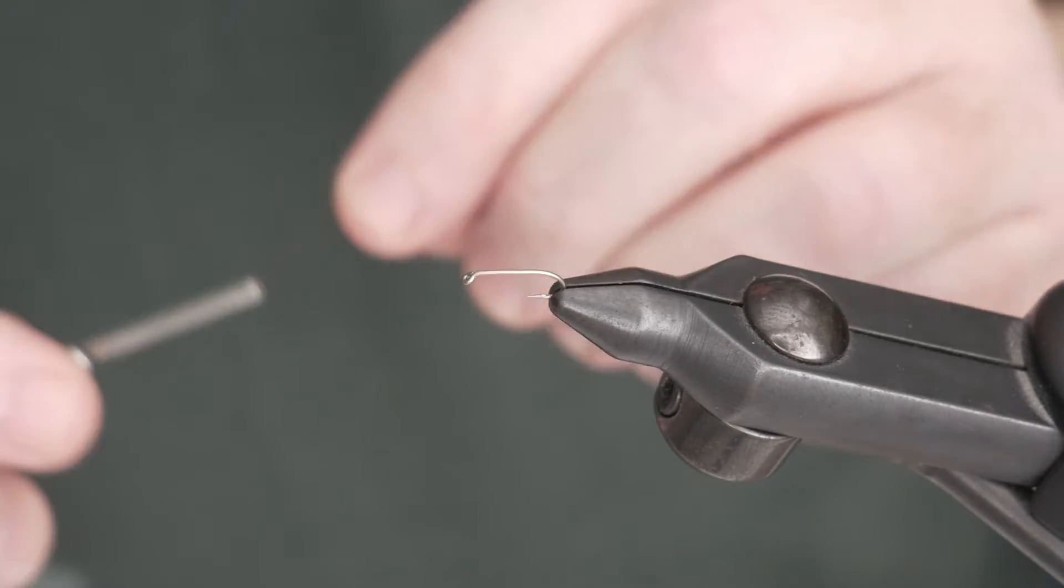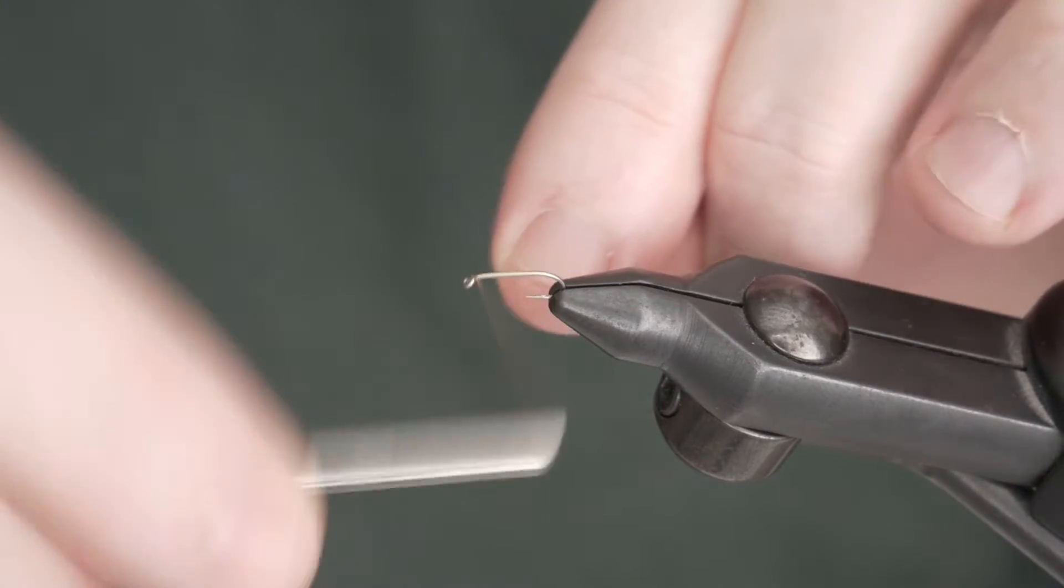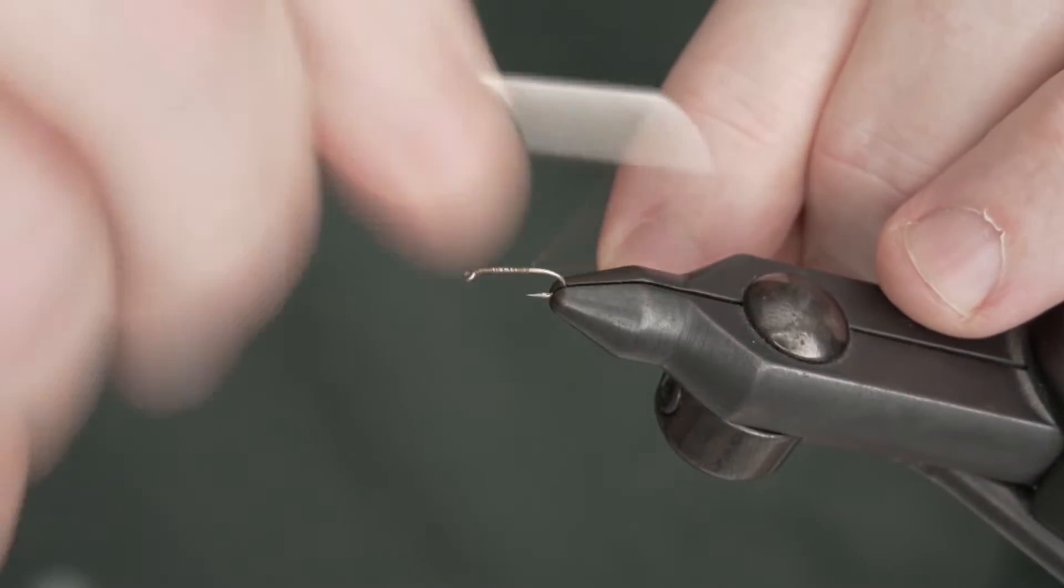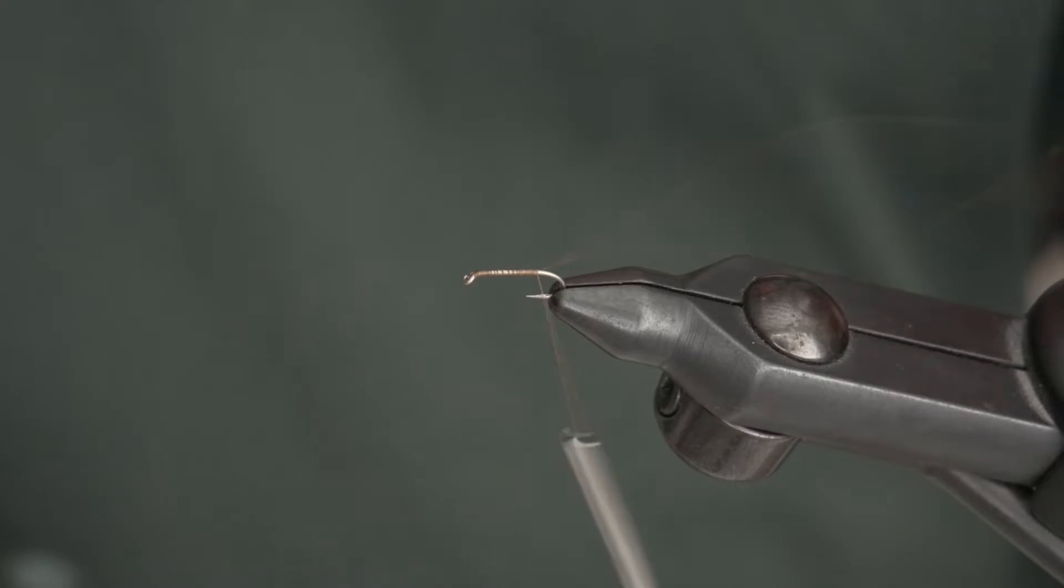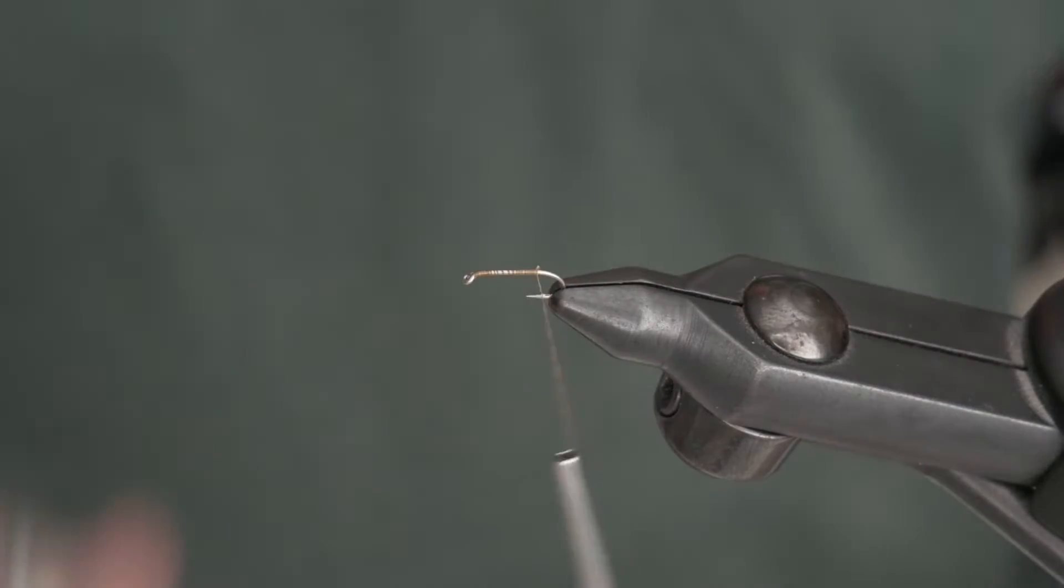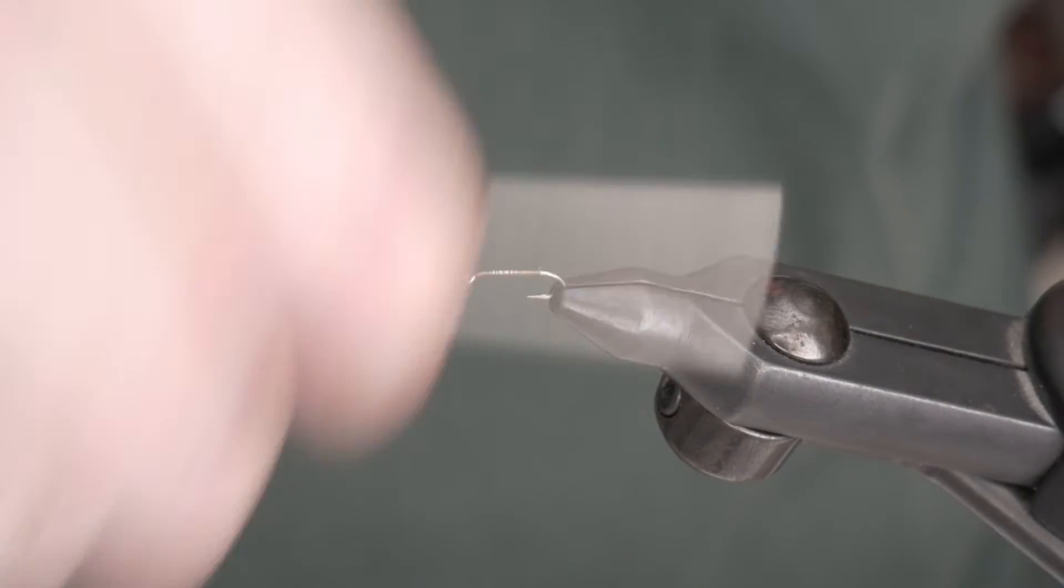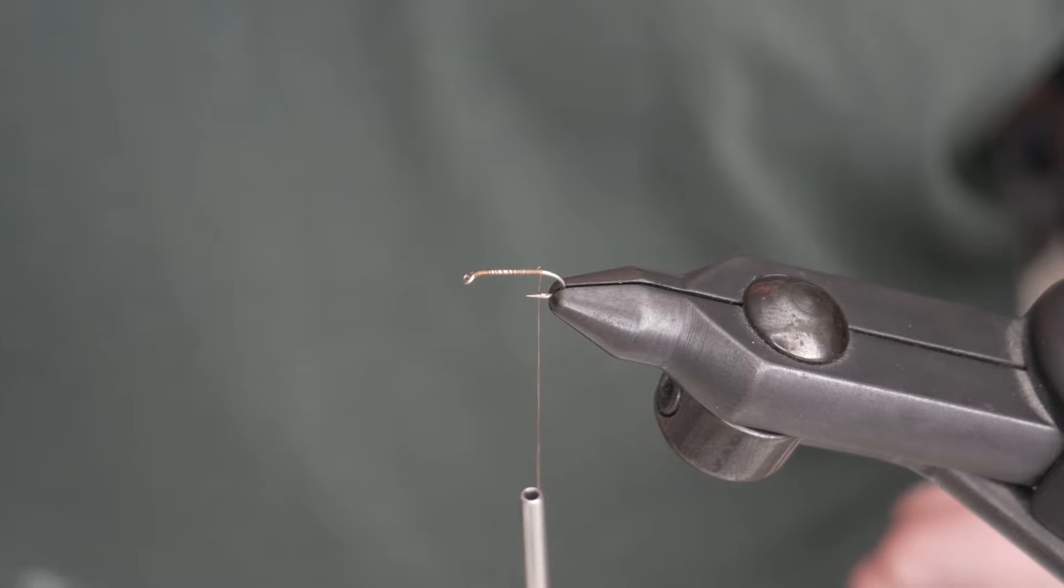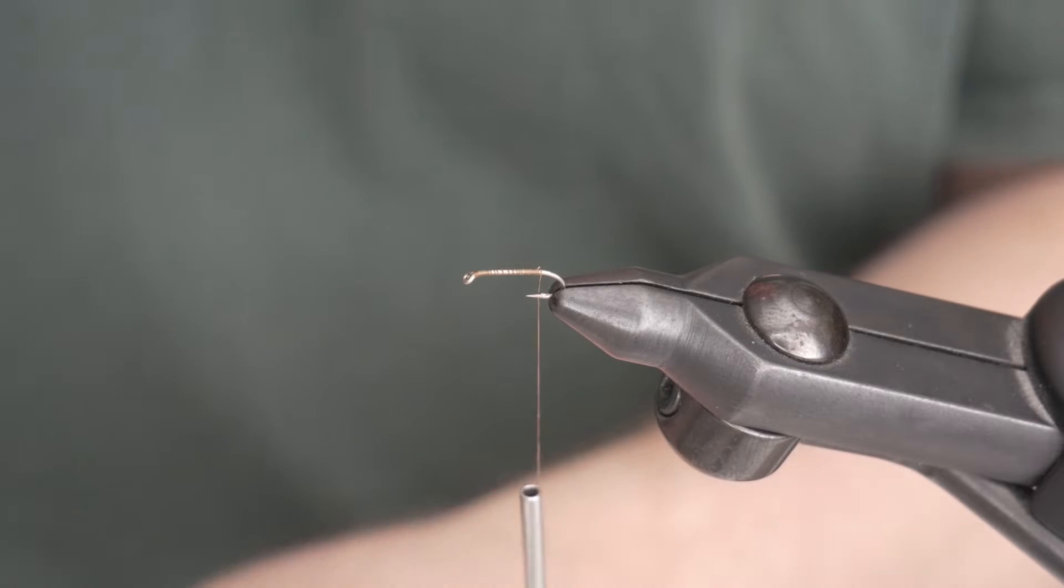So I already have my size 16 nymph hook in the vise and I'm going to apply a base of brown thread. Normally I use 6-aught thread when I'm tying nymphs. You want kind of a buggier, bulky body, well I mean I do on some. For this fly I'm going to use 8-aught because I want to keep that diameter of this fly thinner than you think you would.